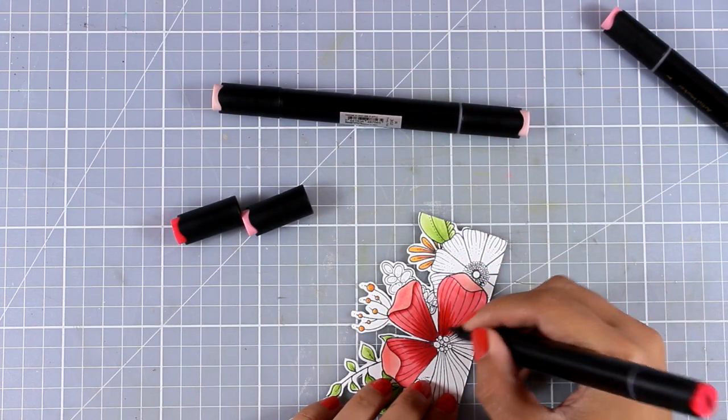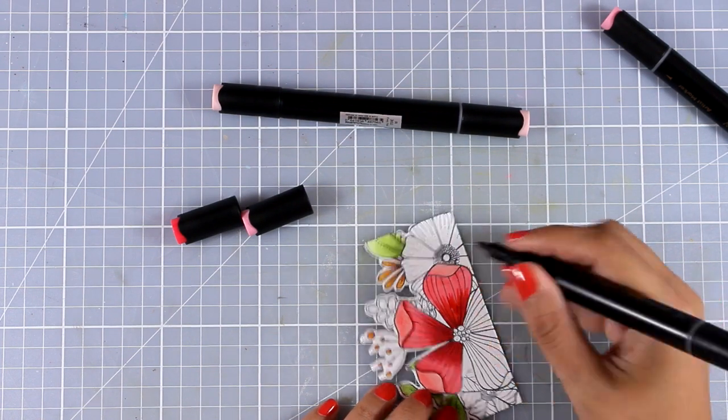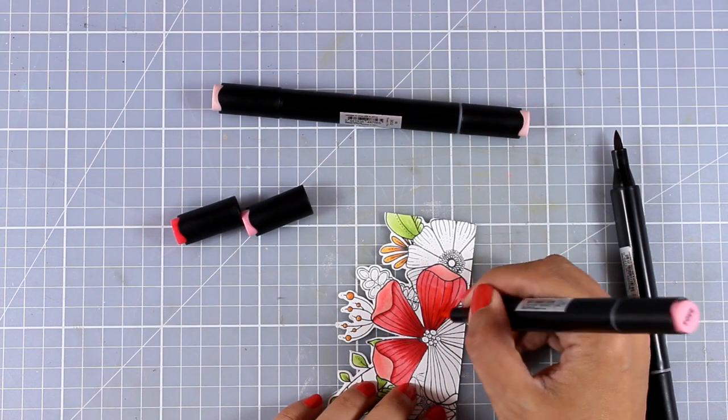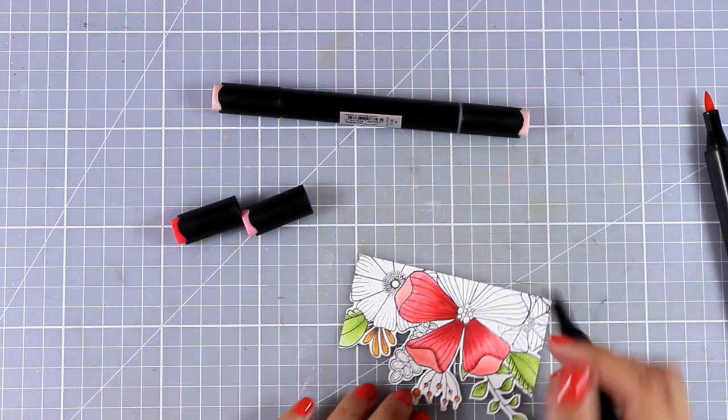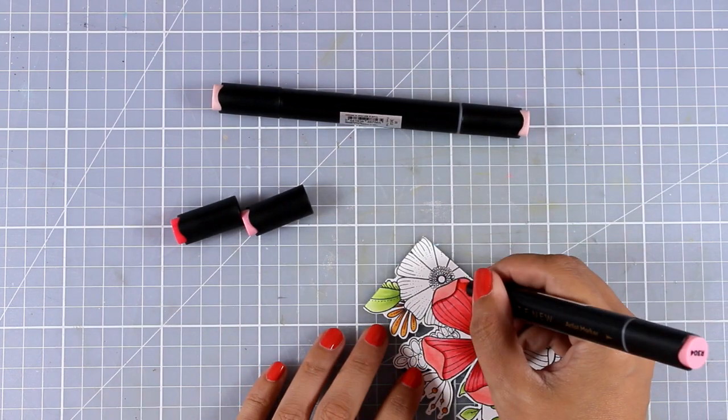So from the three markers that I have on my table at the moment, I grabbed the middle one to color the whole petal and I'm not going to touch the lighter one at all. And then with the darker one, I'm just adding shadow at the center of the petal, and you see that it works beautifully. You don't really need to have too many colors to do the shading.